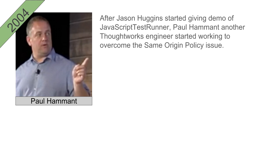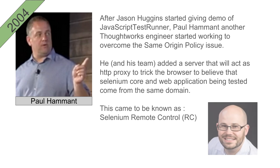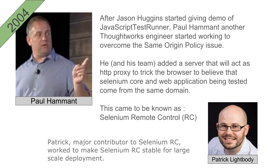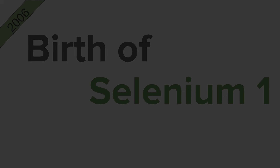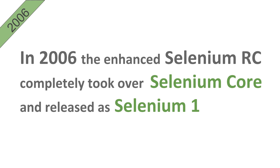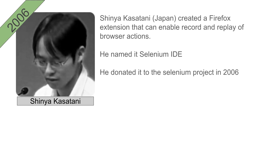To overcome this policy issue, Paul Hammond started working on a server and created it so that it could act as an HTTP proxy to trick the browser into believing that Selenium Core and the web application being tested came from the same domain. He called it Selenium Remote Control. Patrick Lightbody was also majorly involved in this project and helped make Selenium RC stable for large-scale deployments. In 2004, Selenium was made open source, and in 2006 Selenium RC was released as Selenium 1.